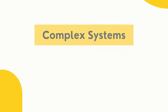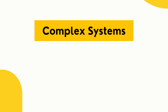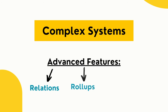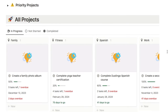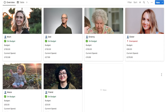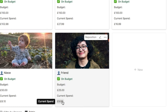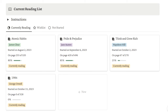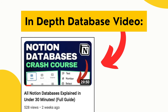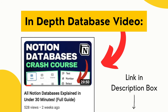You can use databases to create some really complex systems. There are several advanced features like relations, roll-ups, and formulas that have almost an infinite amount of use cases. For example, I use these to set up a countdown to my deadlines, a gift tracker that calculates how much I've spent, and a reading tracker that updates my progress. If you want to learn more about databases, I created an entire video covering them in much more depth — I'll leave a link in the description.